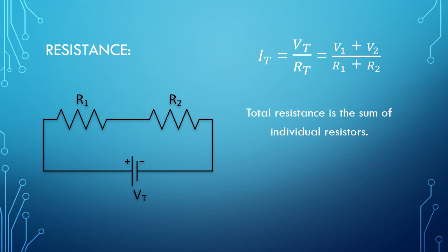Therefore, total resistance in a series circuit is the sum of the individual resistors. This means every addition of a new series resistor will increase the total resistance and decrease the total current.